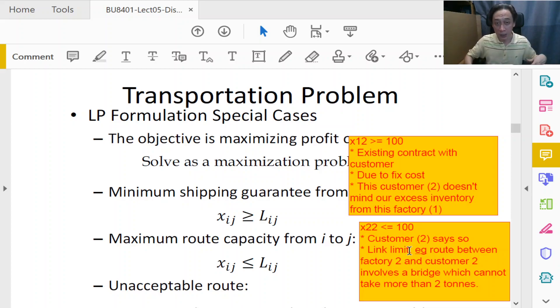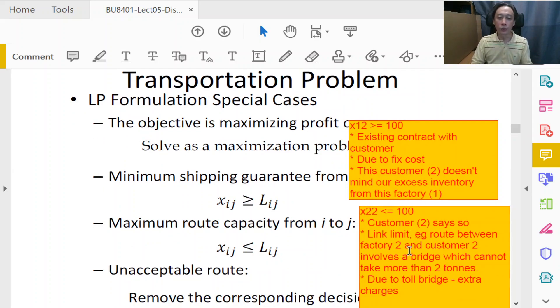It might involve certain safety limits. It could be due to a toll bridge - if you carry too much stuff you might involve extra charges. You want to translate all these very specific environmental factors into the model. These are link-specific, customer-specific, or factory-specific factors, and we translate them into specific constraints and add or modify our model.